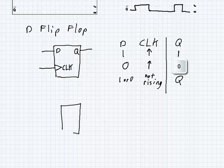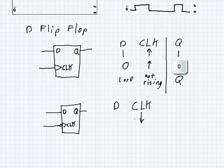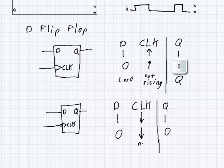We could also have a falling-edge D flip-flop, with a bubble on the clock input to indicate it's falling-edge triggered. Only on the falling edge of the clock — going from high to low — does D get mapped to Q. If D is 1 on the falling edge, Q becomes 1; if D is 0, Q becomes 0. If the clock is not falling, it doesn't matter what D is — Q just maintains its value.